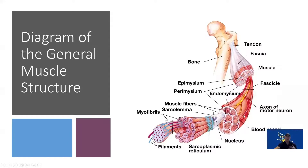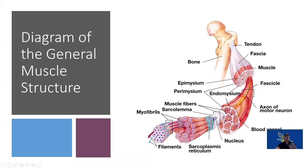Make sure you remember that connective tissue attaches each piece, and that it goes from filaments — the smallest piece — to sarcomere, to myofibril, to muscle fiber, to fascicle, to muscle belly. Remember the connective tissue order: epimysium is around the outside, perimysium is around the fascicle, and endomysium is around the muscle fibers.